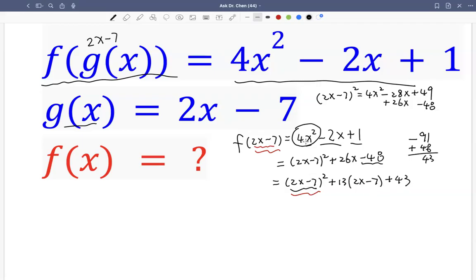Now, we just rewrite this quadratic function into this form. And this form involves 2x minus 7 squared and 2x minus 7. So that means we can write this function as f of x equals to, because we're treating this as the input. The input squared plus 13 times the input plus 43.